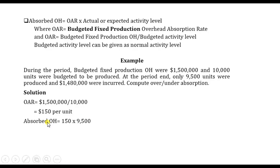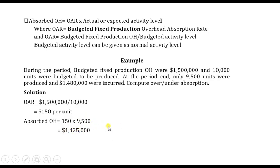We now compute absorbed overheads. Absorbed overheads equal the overhead absorption rate times the actual activity level. The actual units produced were 9,500, so we multiply: $150 × 9,500 = $1,425,000. This is our absorbed overheads figure.